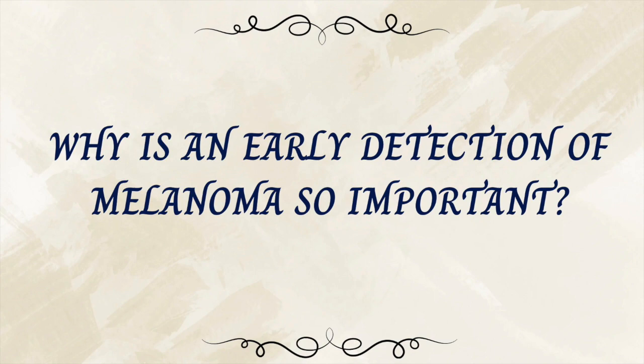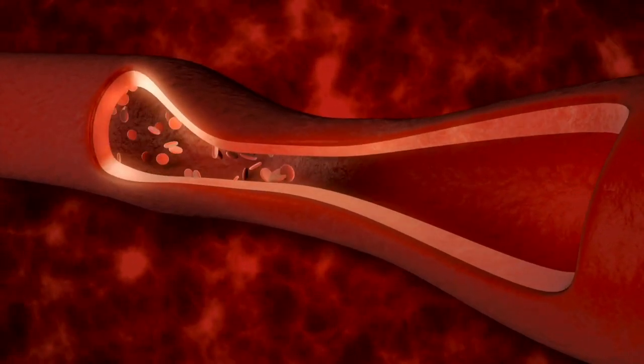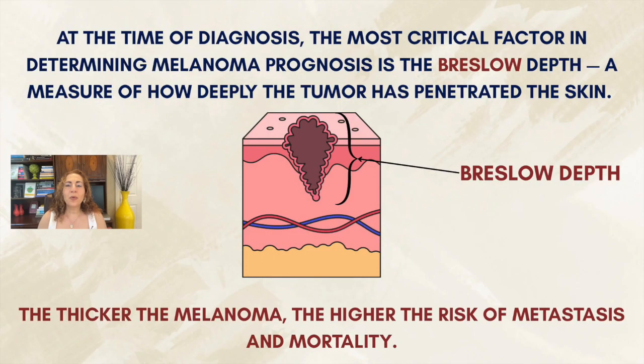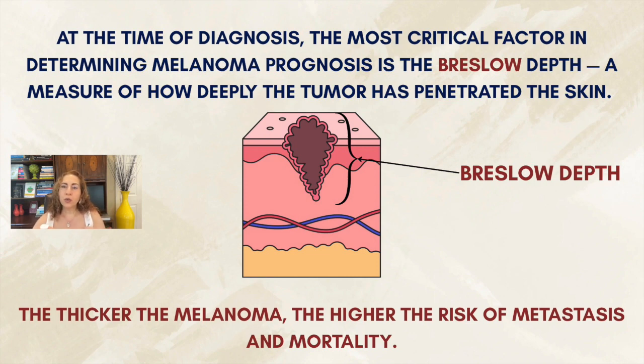Why is early detection of melanoma so important? What makes melanoma dangerous is its ability to spread early and silently — it can travel through the lymphatic system or bloodstream, reaching organs like the lungs, liver, or brain. So early detection can mean a life and death difference. At the time of diagnosis, the most critical factor in determining prognosis is Breslow depth, which measures how thick the melanoma is or how deeply the tumor has penetrated the skin. The thicker the melanoma, the higher the risk of metastasis and mortality — so early detection means catching melanoma before it grows deeper.